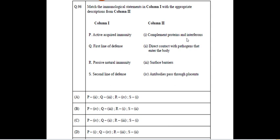An immunological statement with appropriate description: Active acquired immunity is direct contact with pathogen that enter the body and first lines of defense that is surface barrier. Passive natural immunity is antibody passing from the mother to the baby through placenta. Second line of defense is generally carried out by complement protein and interferon.